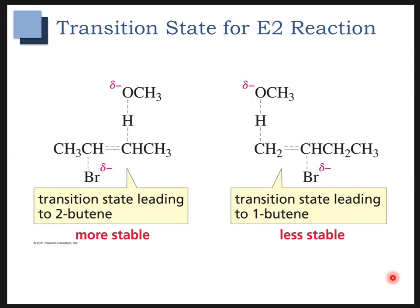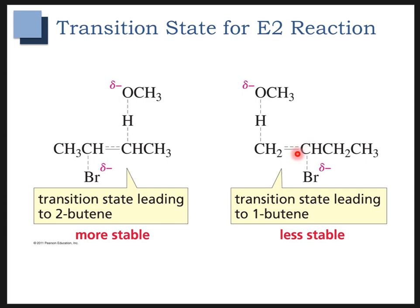Looking at the E2 transition state, the transition state leading to the more stable alkene is double bond-like — a bond and a half. This makes it more stable than the transition state leading to the less stable alkene product, which is also a bond and a half but corresponds to the higher-energy pathway.